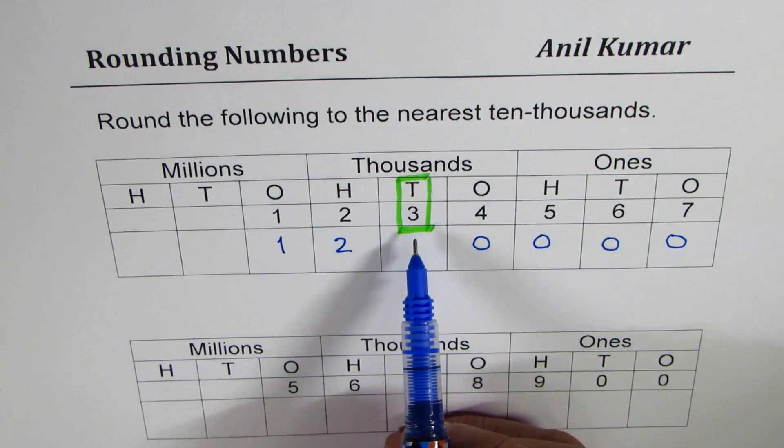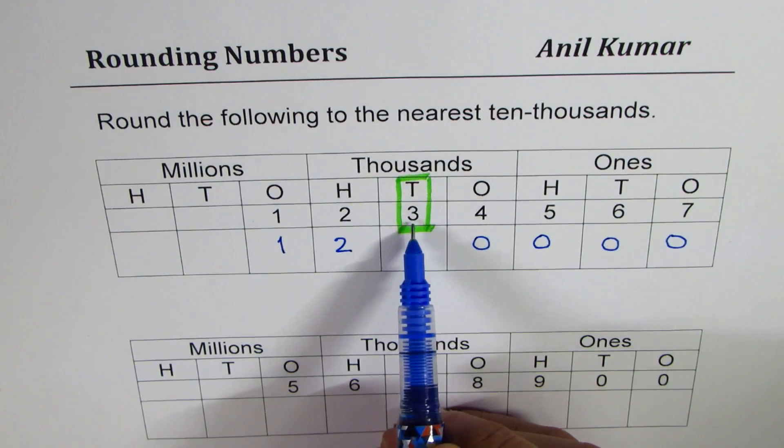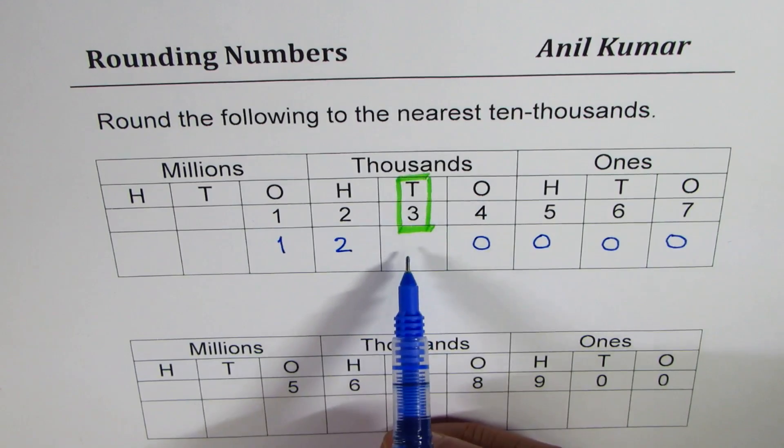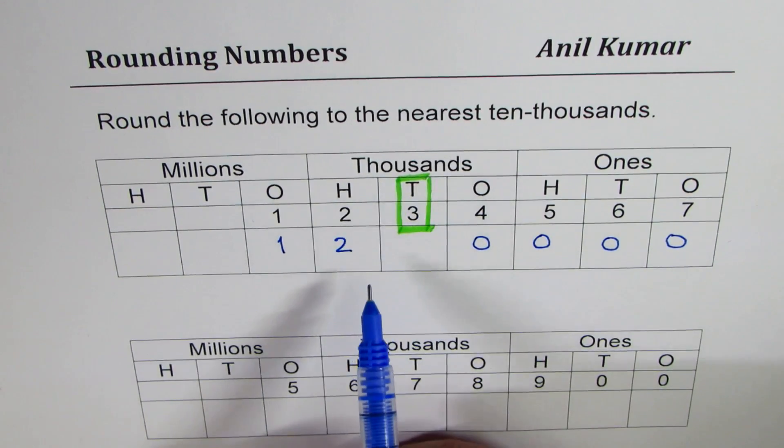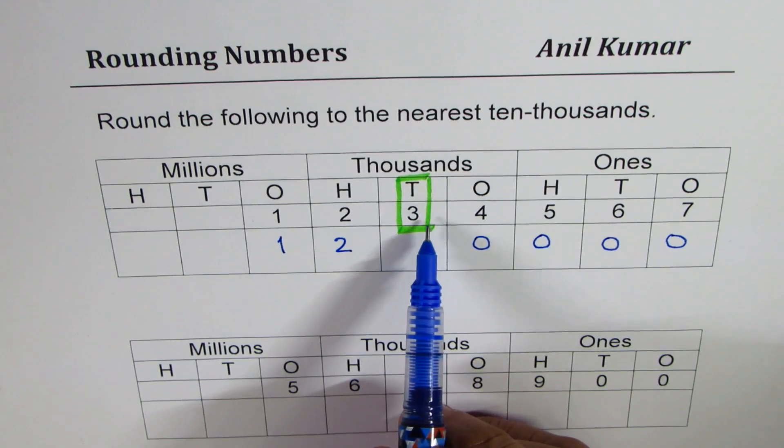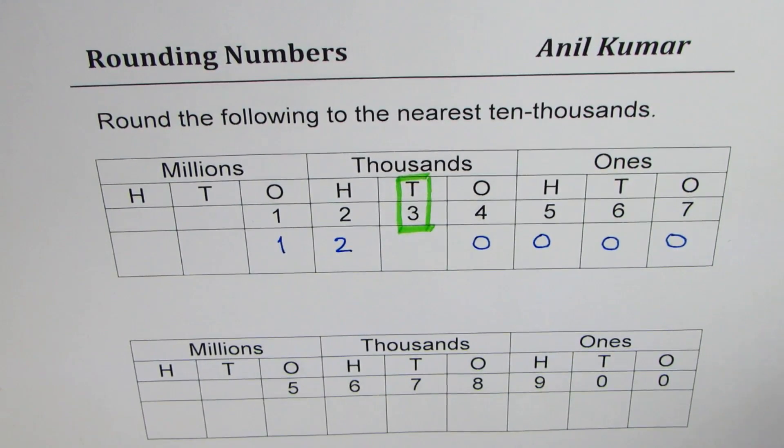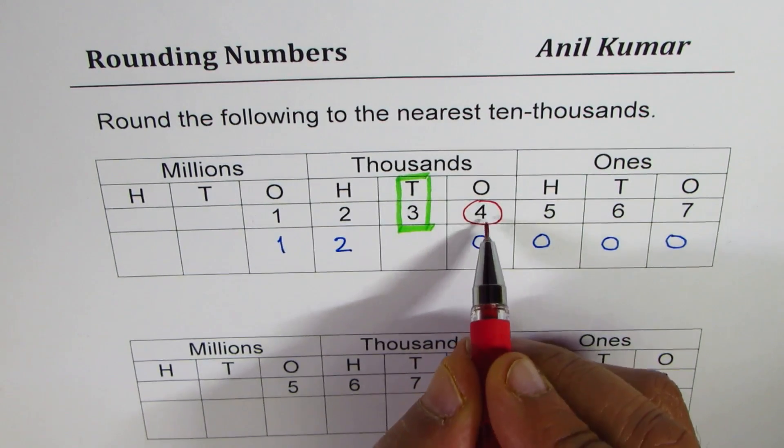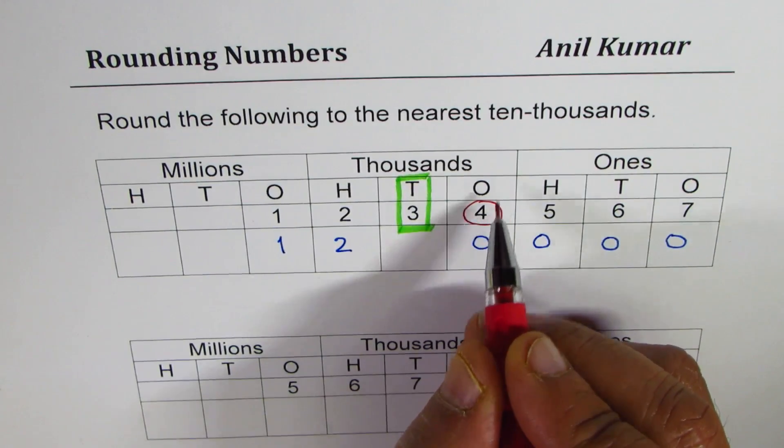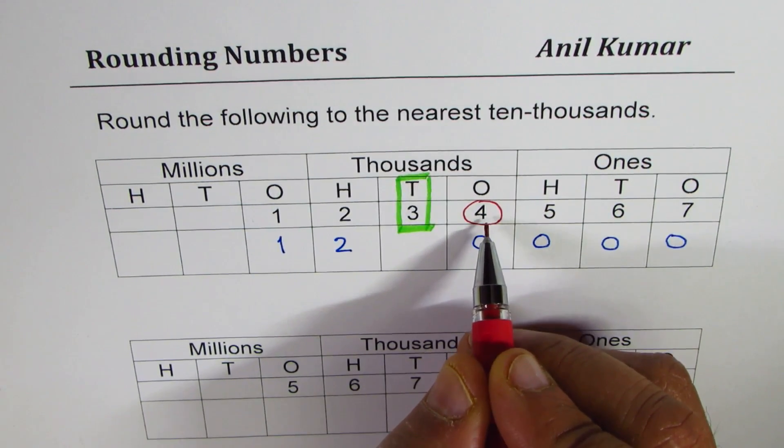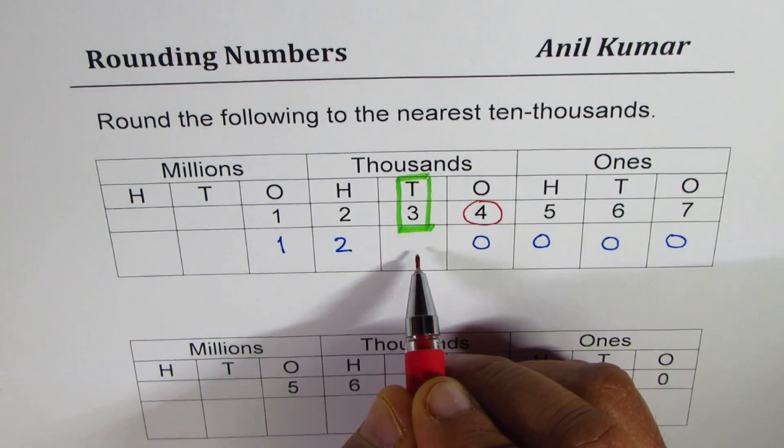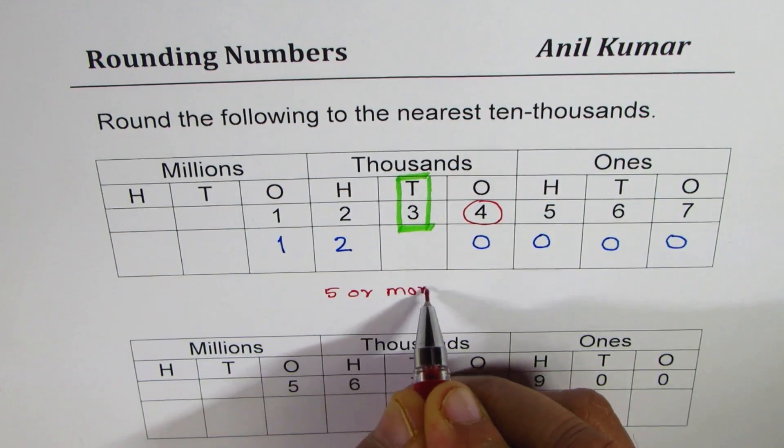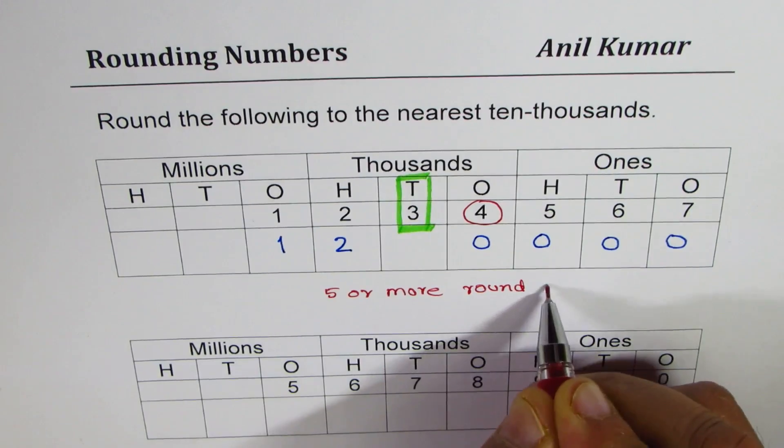Now rounding to ten thousand is a very important decision for this number here in ten thousands place. It could be 3 or it could be rounded higher. That really depends on the number on the right. So check the number on the right. The number on the right is 4. If that number is 5 or more we round higher. If it is less than 5 then we keep the number as such. So if it is 5 or more round higher.